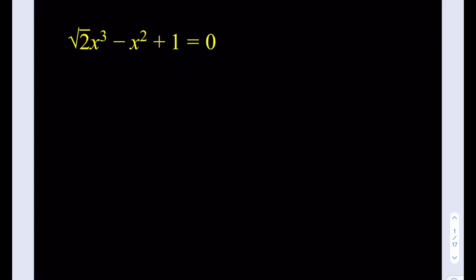Okay, so we do have a cubic equation, square root of 2x cubed minus x squared plus 1 equals 0. So let's notice a couple of things. We don't have the x term, okay, so that's not always a good thing, but we just don't have it.